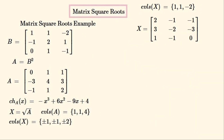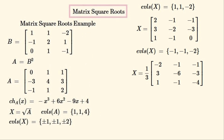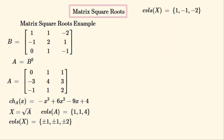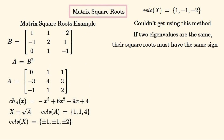We can then find the square root of A for another set of eigenvalues, and for yet another set — notice they are the negatives of the previous square roots. Finally, we can try to find X corresponding to the remaining eigenvalues, but unfortunately this method cannot find those square roots, because the square roots of equal eigenvalues must have the same sign. Otherwise we run into problems — in this case we had an expression for the inverse of a non-invertible matrix. The matrix that was the square root of A with these eigenvalues did exist and is equal to matrix B that we started with.